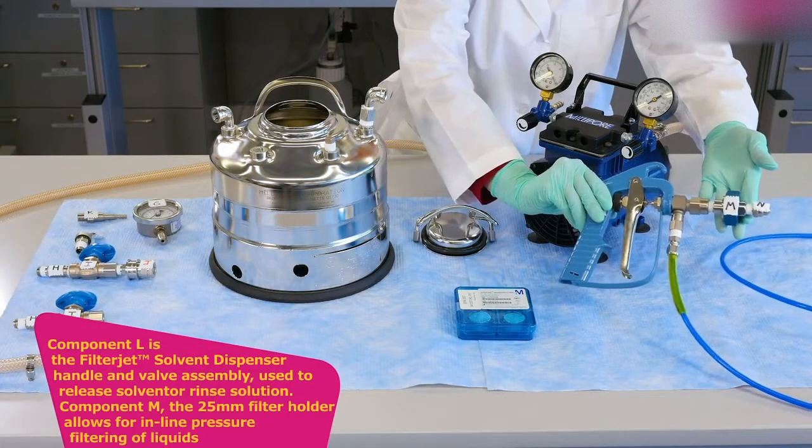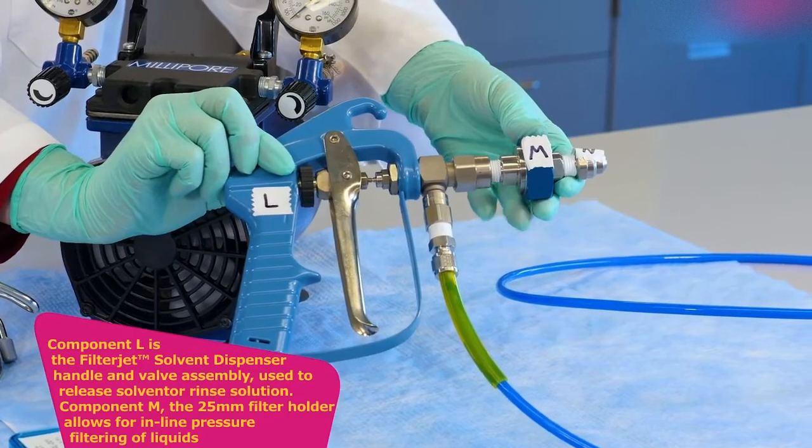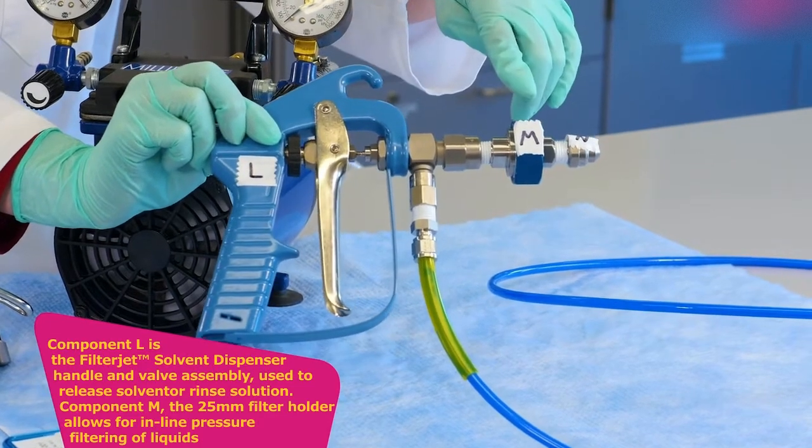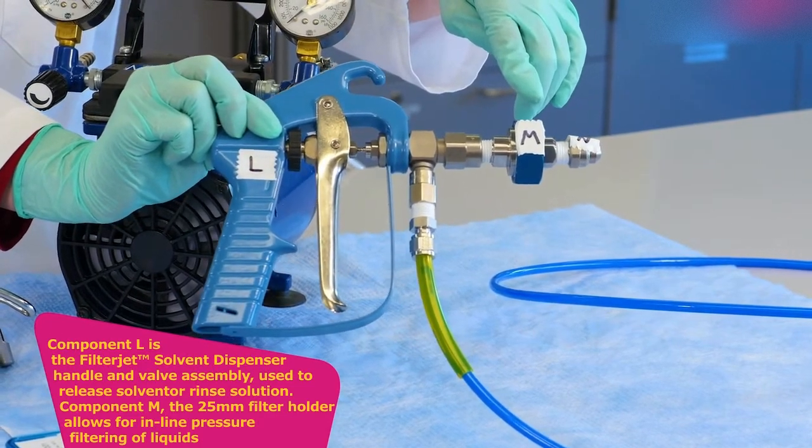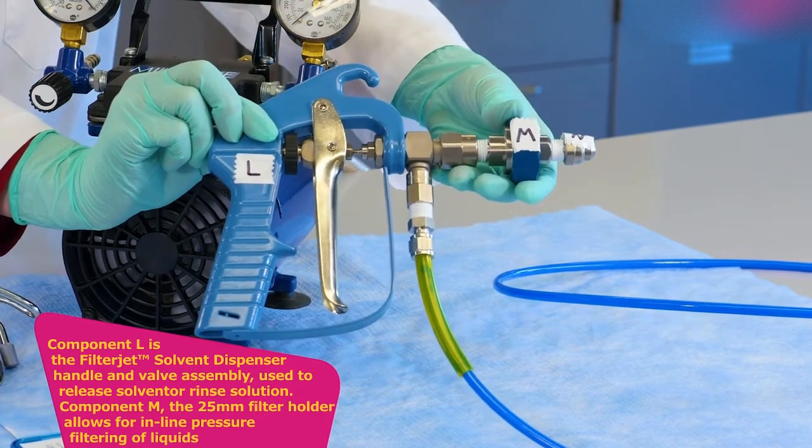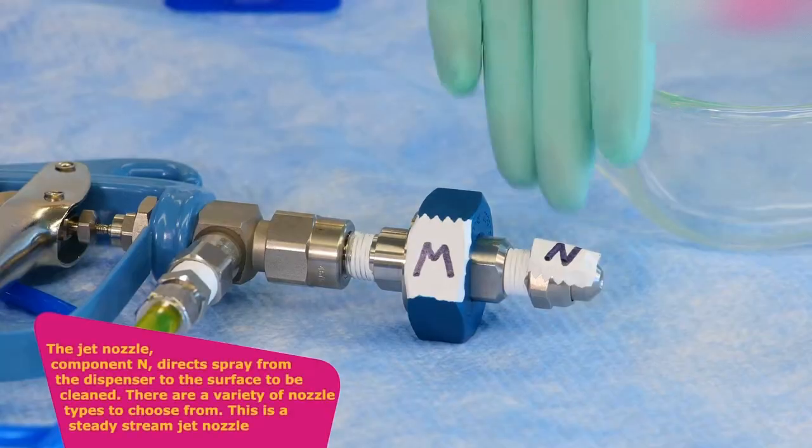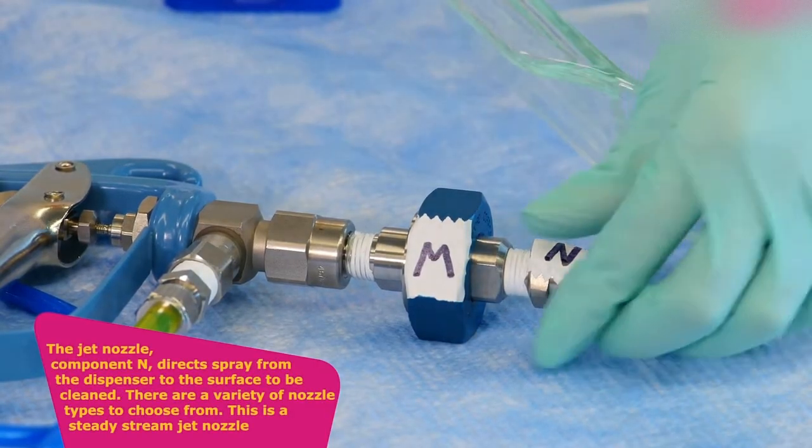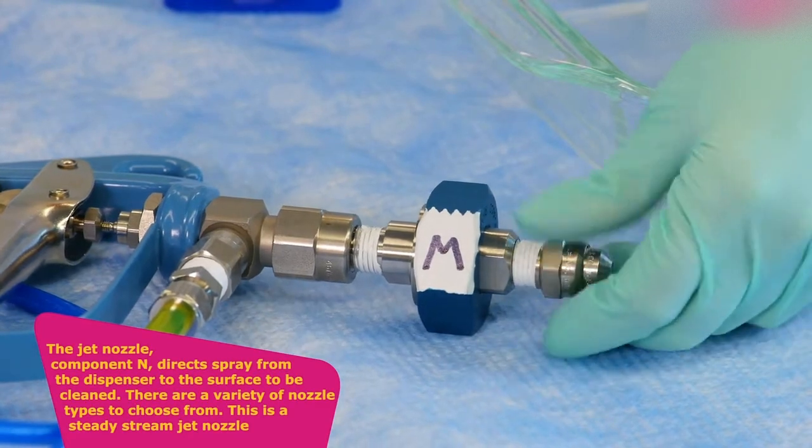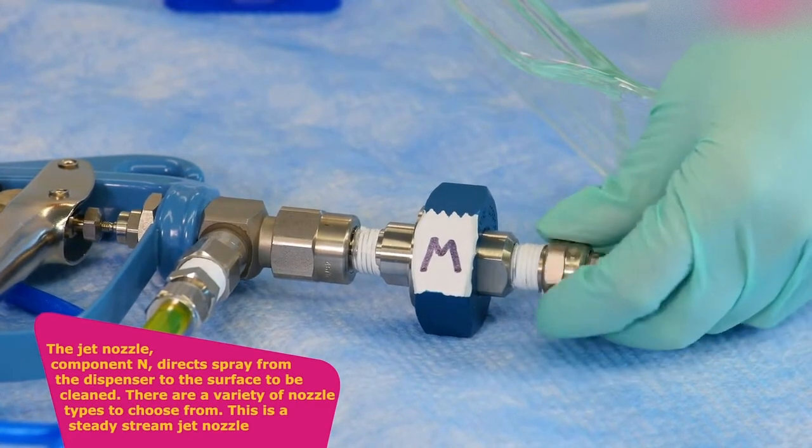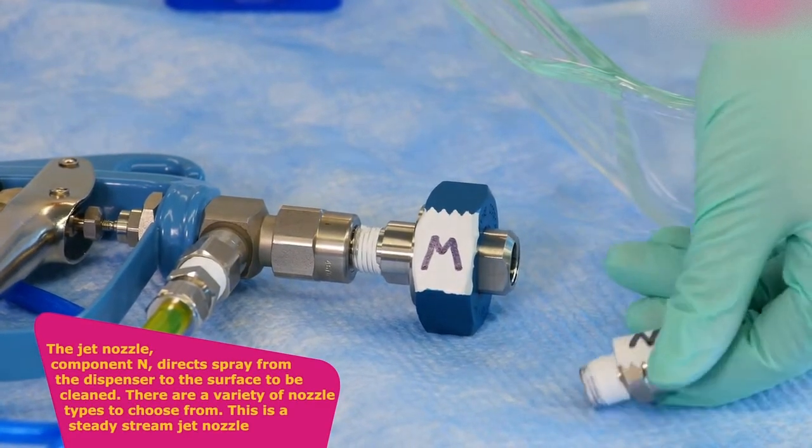Component L is the filter jet handle and valve assembly used to release solvent or rinse solution. Component M, the 25 mm filter holder, allows for inline pressure filtering of liquids. The jet nozzle, component N, directs spray from the dispenser to the surface to be cleaned. There are a variety of nozzle types to choose from. This is a steady stream jet nozzle.